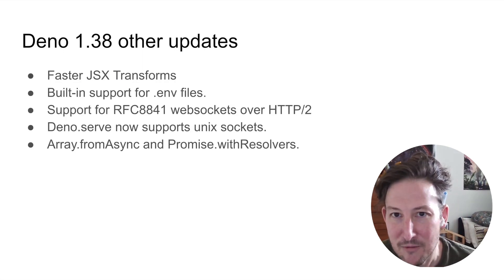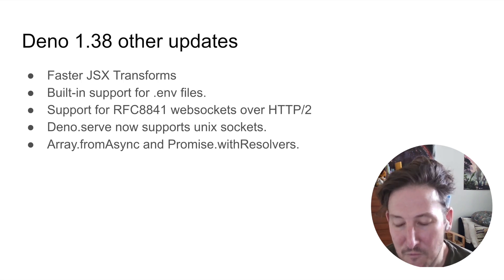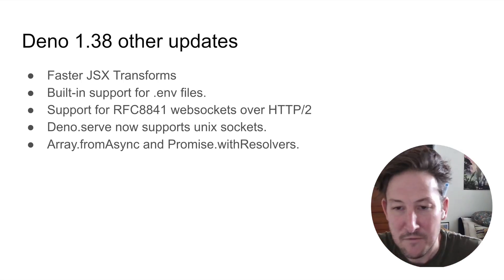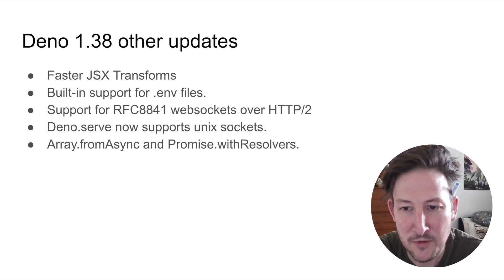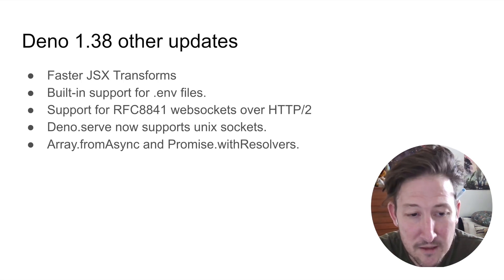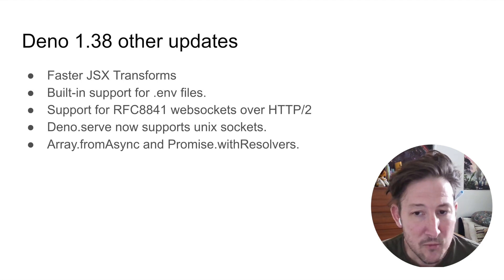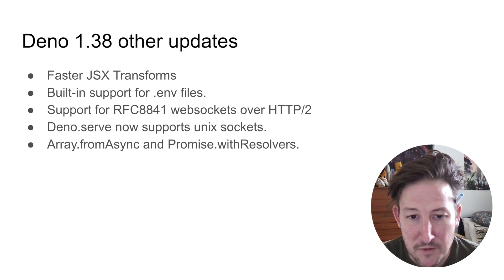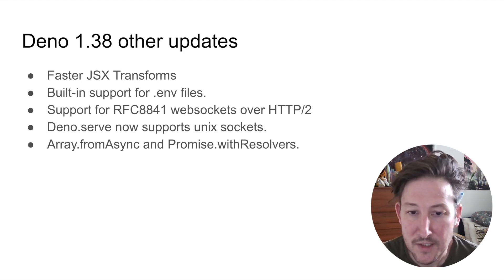Dino 1.38 has tons of other features — it was really one of our biggest releases yet. Faster JSX transforms are very apparent in fresh benchmarks now. We now have support for .env files built into Dino, support for WebSockets over H2, and for anybody building daemons with Dino, Dino serve now supports HTTP over Unix sockets. With the latest V8 upgrade, we now have support for Array.fromAsync and Promise.withResolvers.